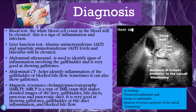Looking at the ultrasound image on the right, we see the thickened wall of the gallbladder, free fluid in that space, stones within the gallbladder, and the absence of echoes posterior to the calculi — that's the acoustic shadowing caused by the stones. We can also do an abdominal CT scan, which can help identify inflammation of the gallbladder, blocked bile flow, and sometimes the gallstones themselves.